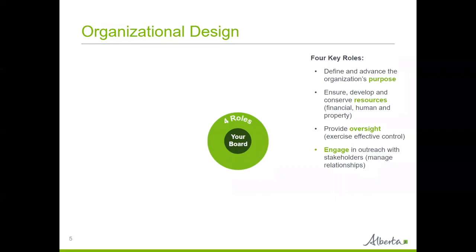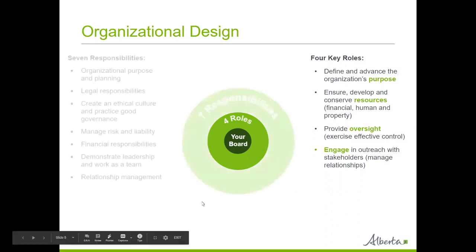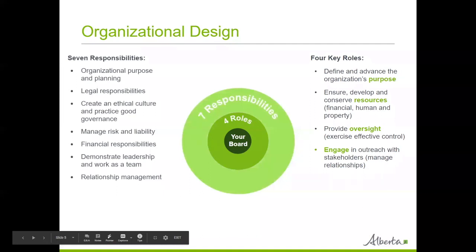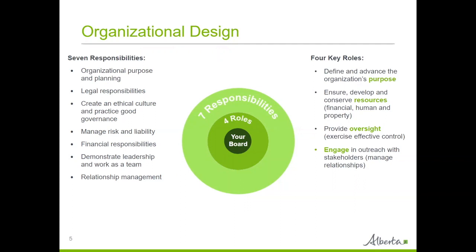The last key role is engagement, which is really about relationships. Engagement could be outreach with external stakeholders, or it could be with internal stakeholders like your staff and volunteers. It is one of the four key roles of the board to engage in and manage outreach with stakeholders. These four key roles describe what the board should be thinking about and the roles that are necessary for the board to be involved in. The board also has seven key responsibilities, and these seven responsibilities describe the actions that help the board successfully fulfill their four key roles.